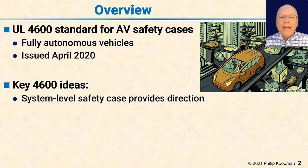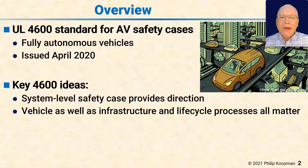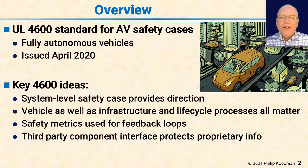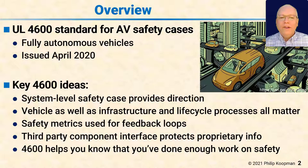Here are some key ideas for 4600. First, a system-level safety case provides direction. The vehicle, as well as infrastructure and lifecycle processes, all matter and have to be included in the safety case. Safety metrics are used for feedback loops to help continuously improve even after deployment. Third-party component interfaces protect proprietary information for third-party component vendors. Finally, conformance to 4600 helps you know that you've done enough work on safety to be able to deploy in a responsible way.